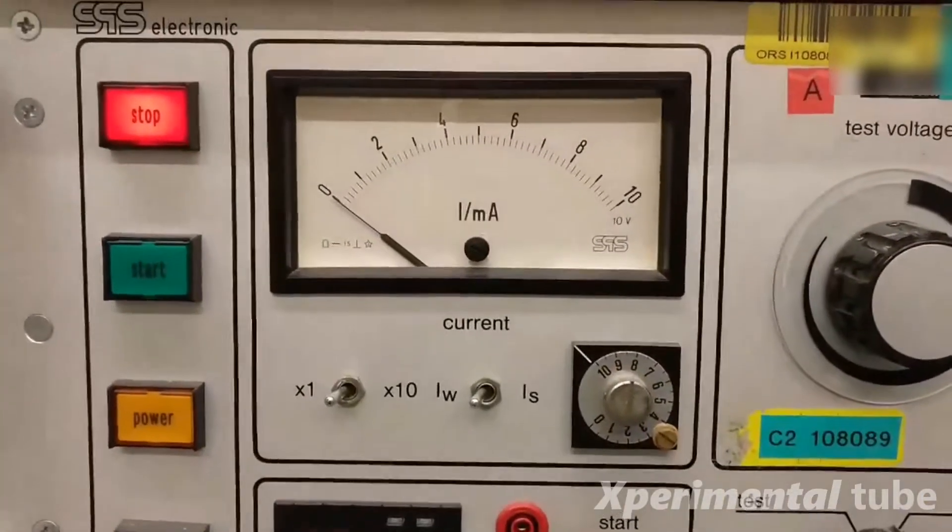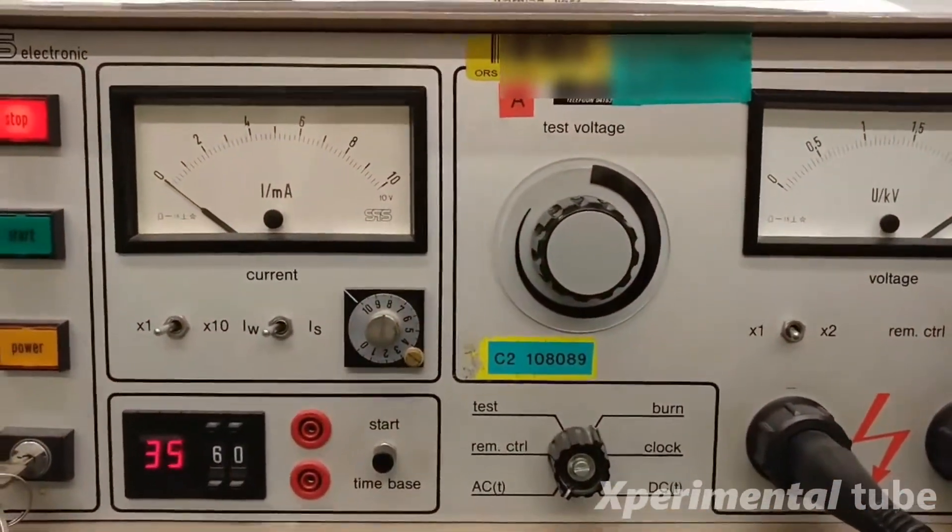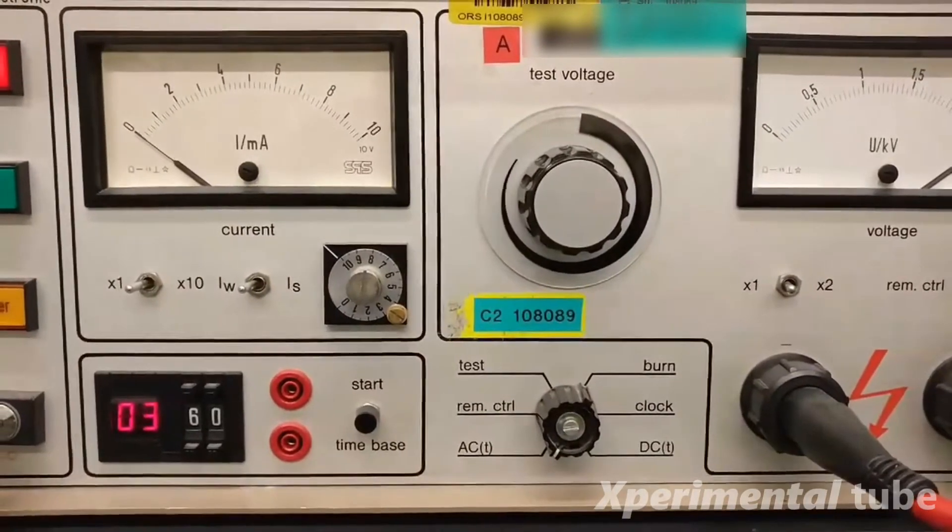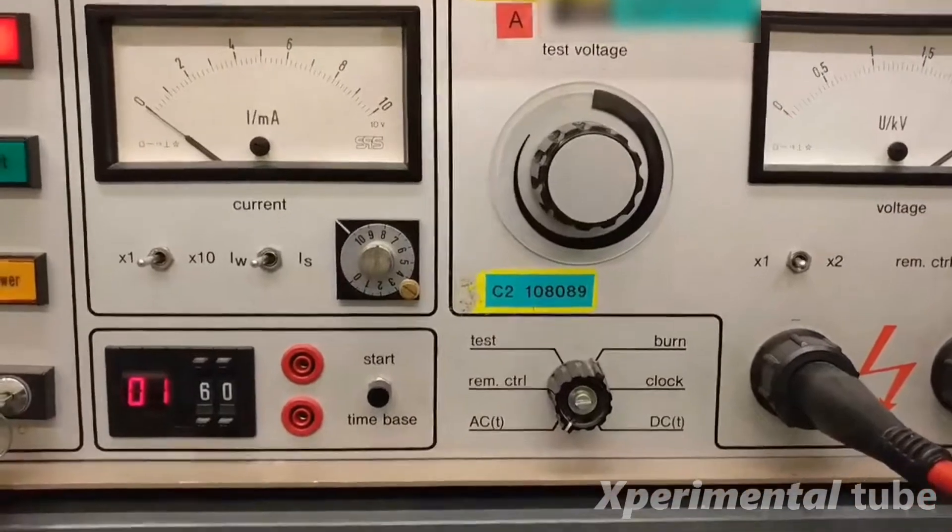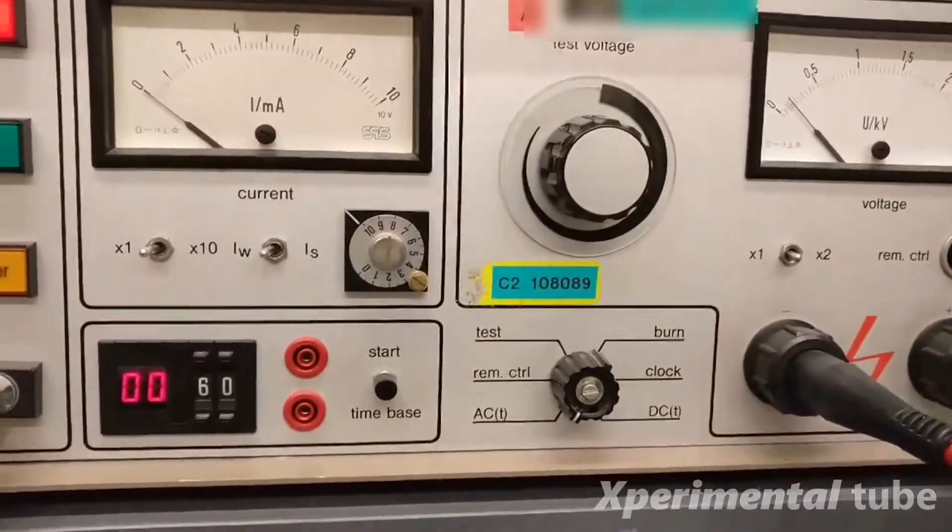So up till now no current flow so that's encouraging. So that looks good. Let's speed it up a bit. So this seems to pass. This is definitely okay. 60 seconds, 2.5 kilovolts between AC and DC is good.